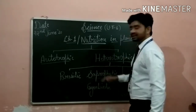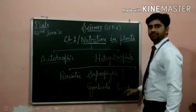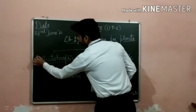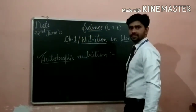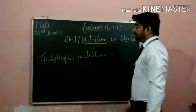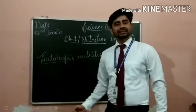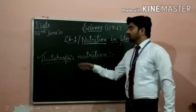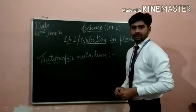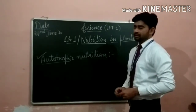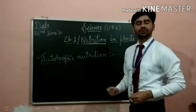Now we will discuss these types of nutrition one by one. First of all, we will discuss autotrophic mode of nutrition. In this type of nutrition, plants — or we can say green plants — make their food with the help of carbon dioxide and water. Autotrophs perform the reaction that is photosynthesis.